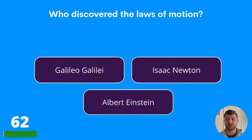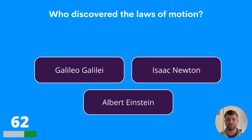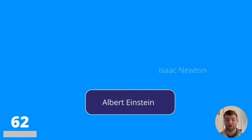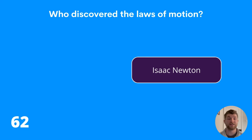Question sixty-two: who discovered the laws of motion? Galileo Galilei, Isaac Newton, or Albert Einstein? The answer is Isaac Newton.